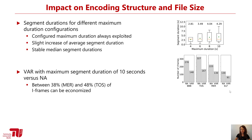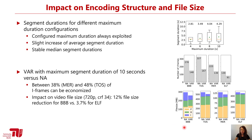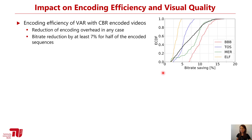Looking at the implications for file size, we see that how much we can save is highly dependent on the video. In the case of Big Buck Bunny we can save 12 percent of the file size, while it is only 3.7 percent for the Influente video. Summarizing the potential for saving bitrate across all CBR encoded videos in our test set, we can observe that in 50 percent of the encoded sequences we can save 7 percent of bitrate or even more.